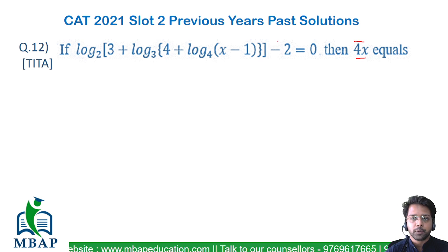The first thing we'll do is take 2 to the other side. This whole expression will now look like log base 2 of [3 + log base 3 of (4 + log base 4 of (x - 1))] equals 2.